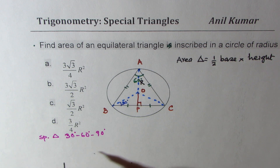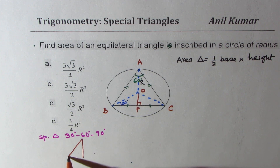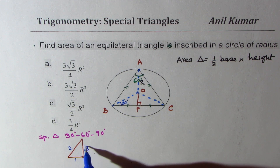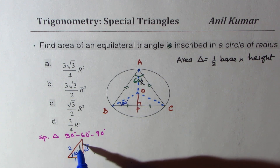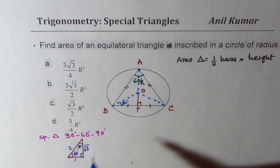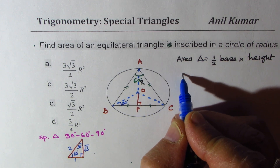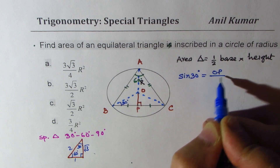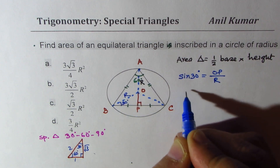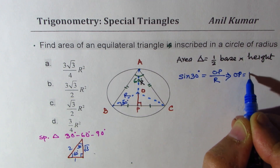That is important. We'll take the special triangle which is 30-60-90 and solve this question without a calculator. In trigonometry, these are very important triangles to always consider — the ratio of the sides is well known. So if we want to find OP, we know that sine of 30 equals OP over R.